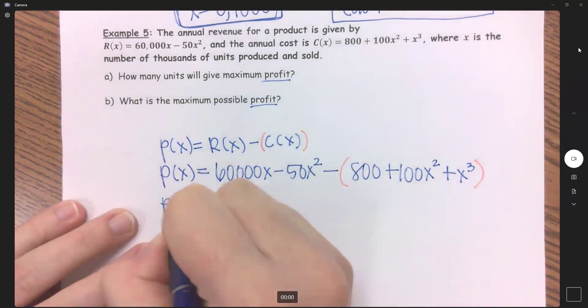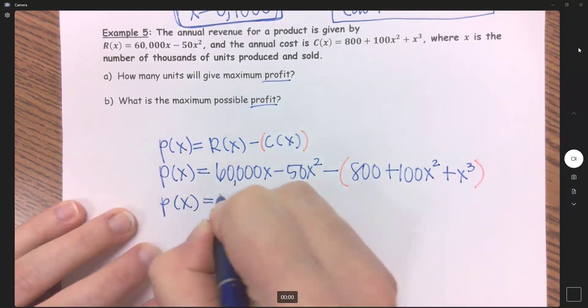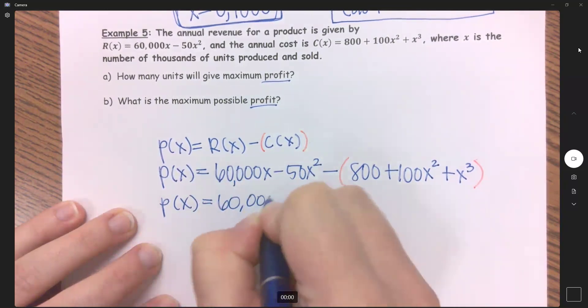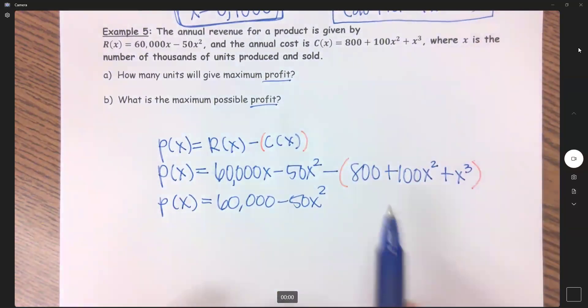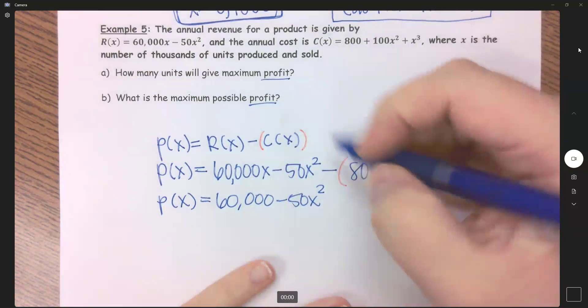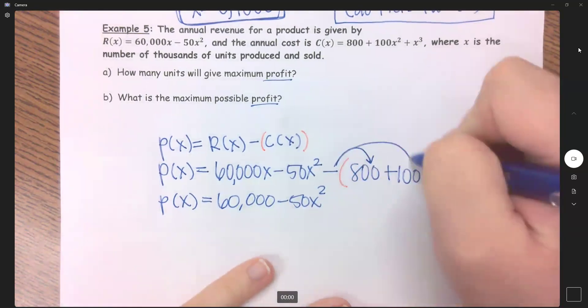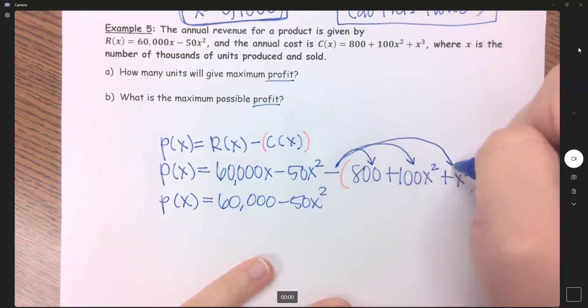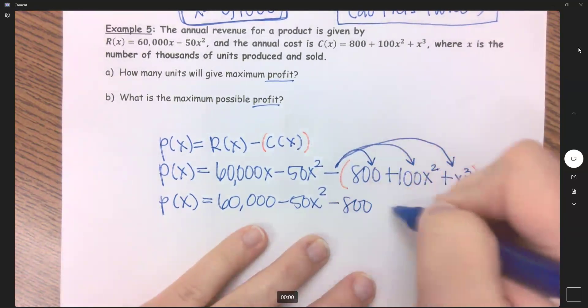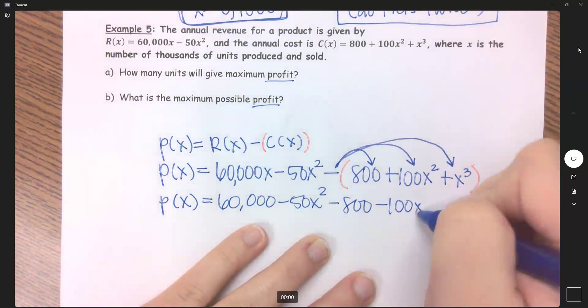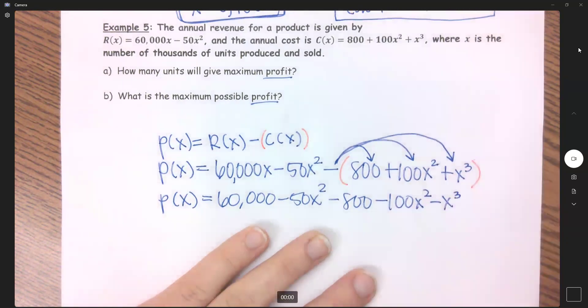So let's distribute that negative in there. Notice it's positive, positive, positive. When I distribute that negative into everything, now it's going to be negative, negative, negative. So minus 800 minus 100x² minus x³.